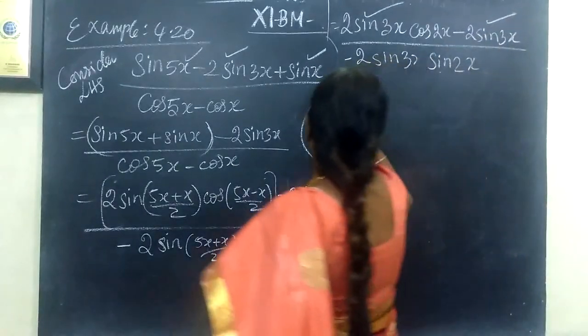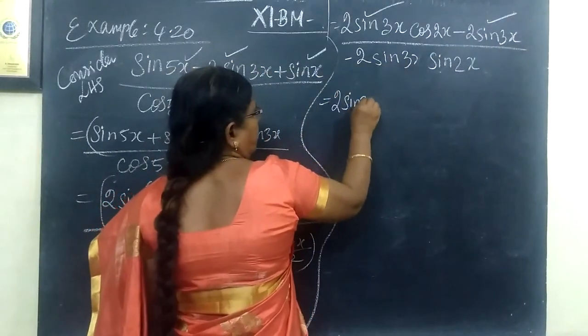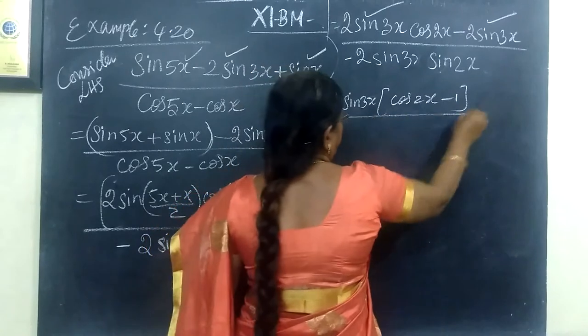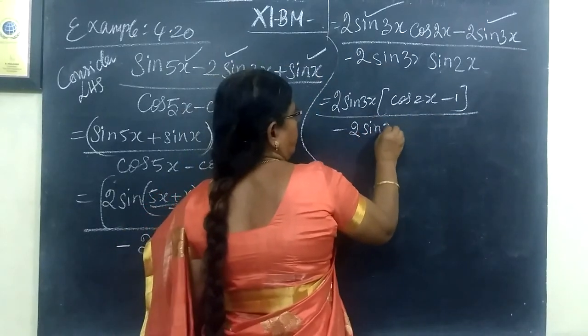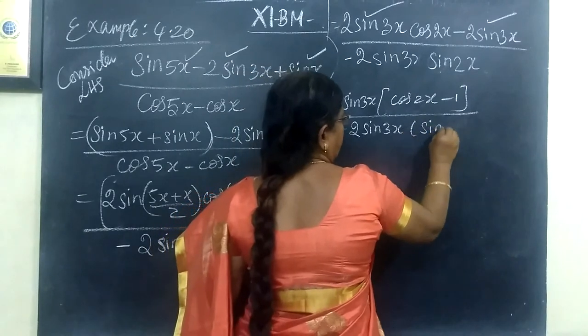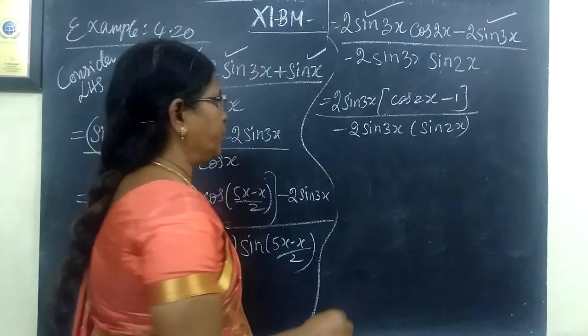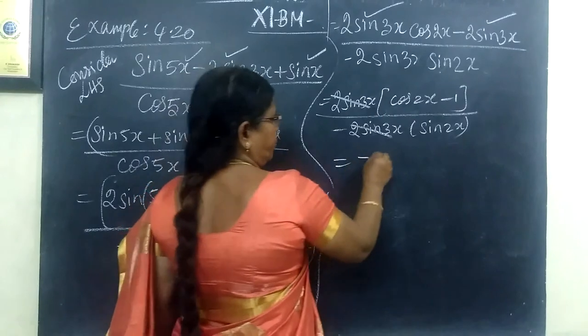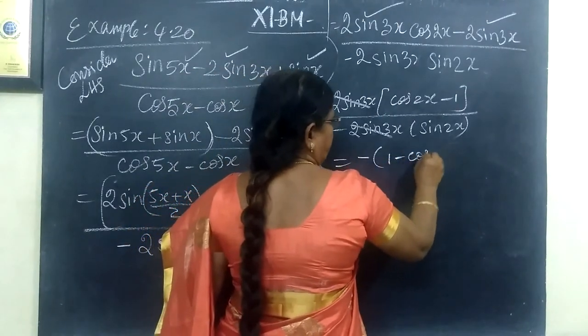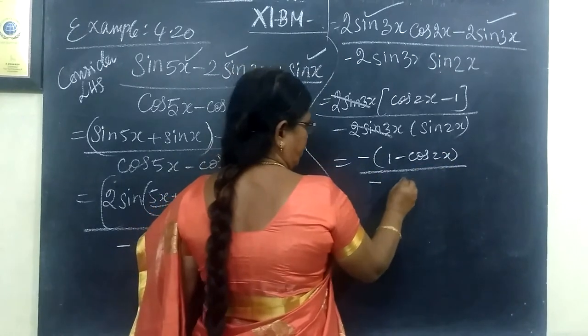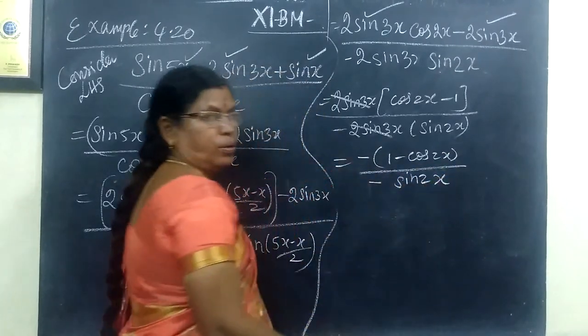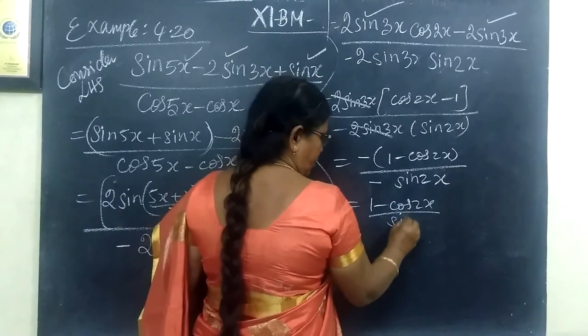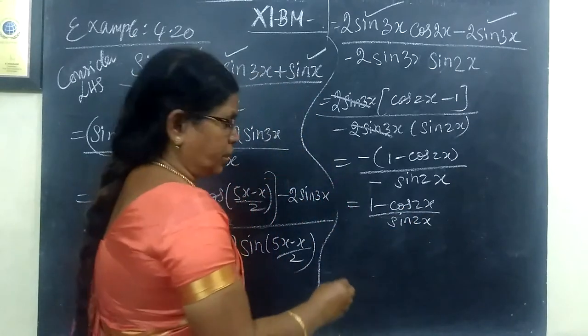Now you can take 2 sin 3x common. So 2 sin 3x common. This is cos 2x minus 1 divided by 2 sin 3x, then sin 2x. So 1 minus cos 2x by 2 sin 2x is equal to.